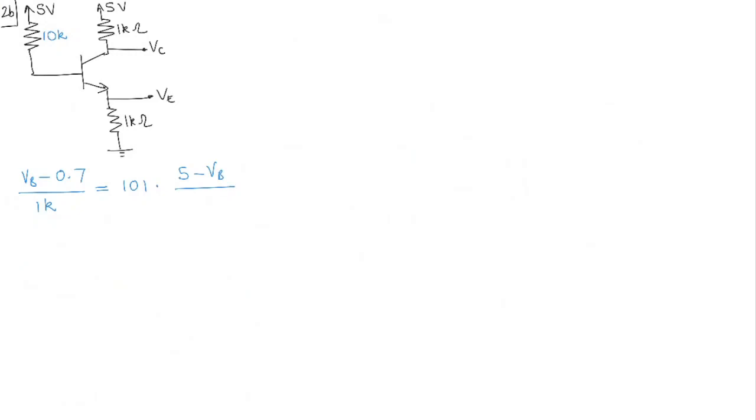So V, 5 minus Vb divided by 10k. So that's what you should get, and this is all assuming active mode. So let's just say that this is active mode. Okay, where beta is equal to 100. In active mode, beta is 100. And you can calculate Vb, and what you get is Vb equal to 4.6 volts.